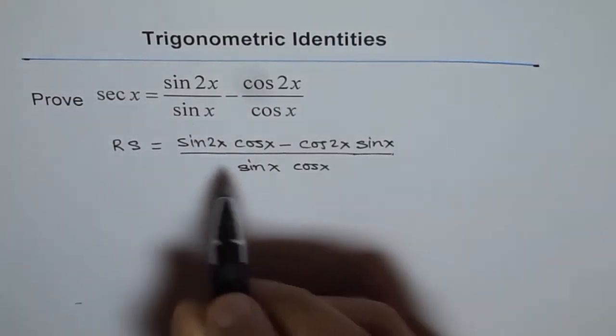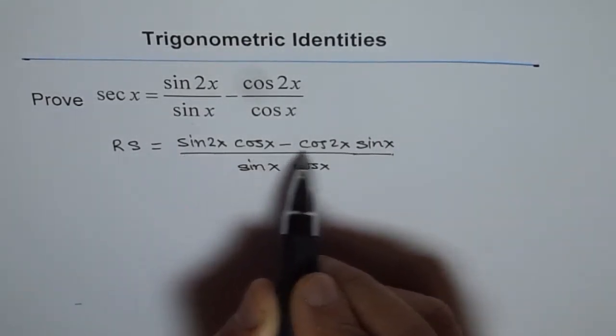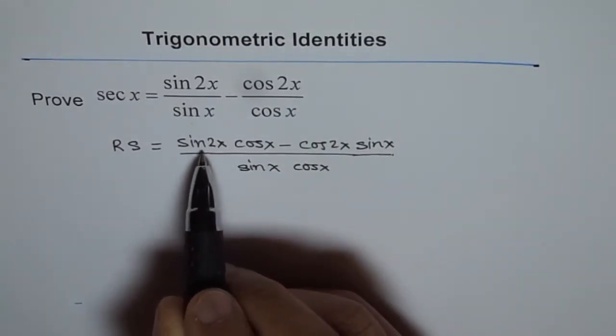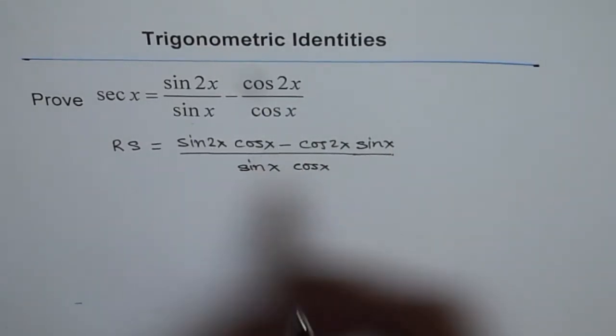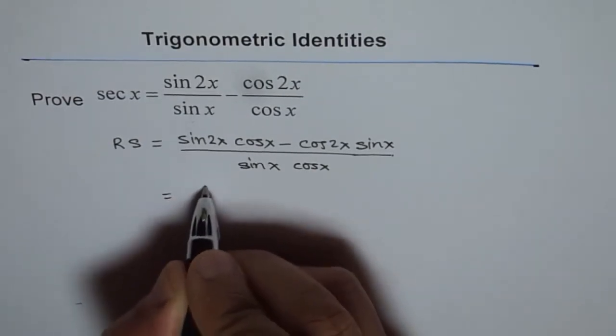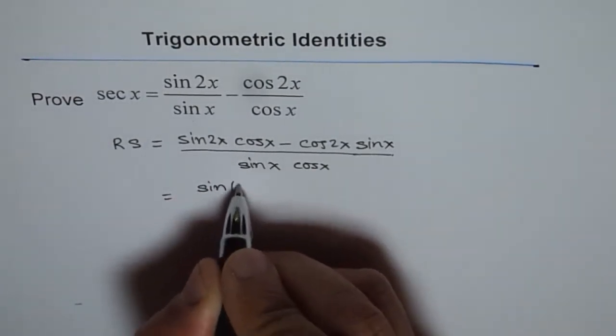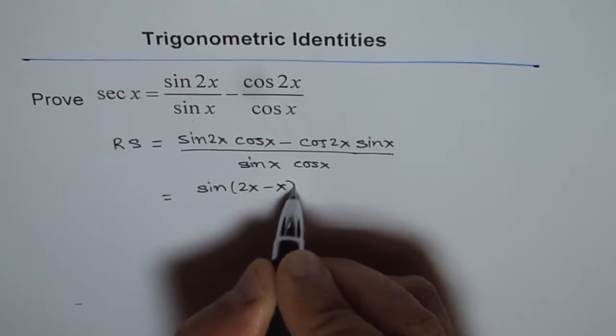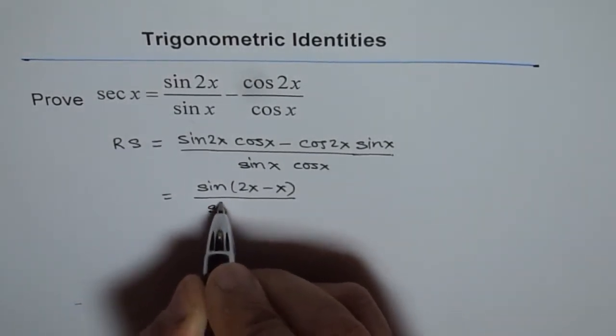Now, sin 2x cos x minus cos 2x sin x is like sin of 2x minus x. So, this could be written as sin 2x minus x over sin x cos x.